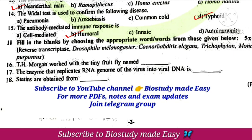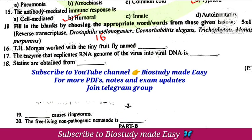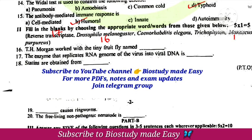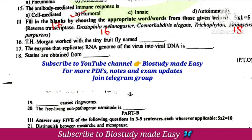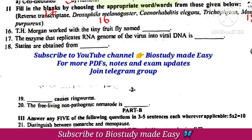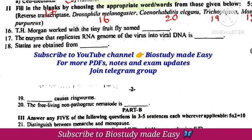Next, fill in the blanks. T.H. Morgan worked on the fruit fly named Drosophila melanogaster. The enzyme that replicates the RNA genome of the virus into viral DNA is reverse transcriptase. Statins are obtained from Monascus purpureus, which is a yeast. The organism that causes ringworm is Trichophyton. The free-living non-pathogenic nematode is Caenorhabditis elegans.